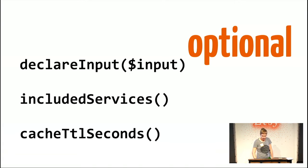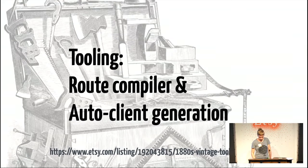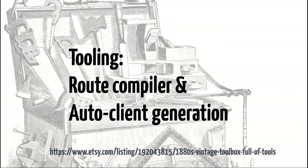There are also optional functions. The declare-input function is only necessary if the endpoint actually needs input parameters — some don't. The included-services function allows an endpoint to opt into a specific service. And there's a cache-TTL-seconds function which lets you specify whether an endpoint should be cached and what the time-to-live should be. The framework needs two more parts: how an API request gets routed to an endpoint, and how to make an API request from code. Both can be compiled from the endpoint declaration files — that's the job of the API compiler. Code is generated using a Mustache template, which is funny because it's a template language for websites, but it works really well in this context.